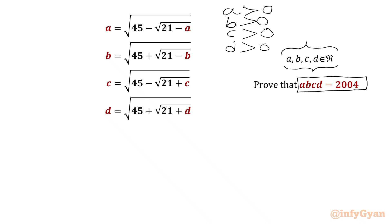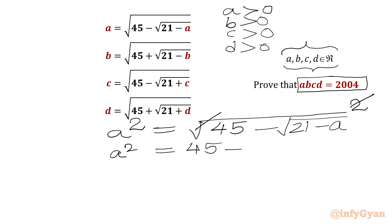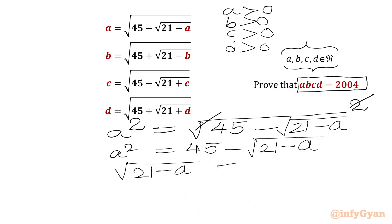Now we will begin with our first equation: A equals the square root of 45 minus the square root of 21 minus A. We will consider squaring both sides. The square root and square will cancel out, giving us A² = 45 minus √(21 - A). After rearranging the terms, √(21 - A) = 45 - A².